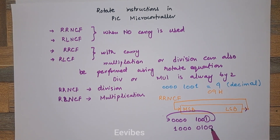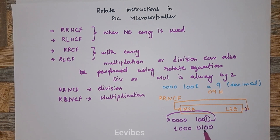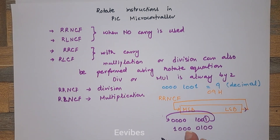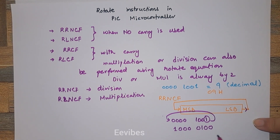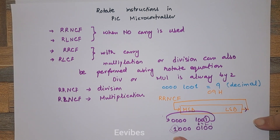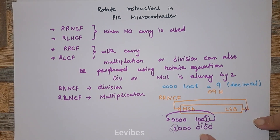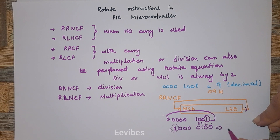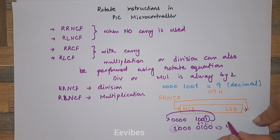If you look at the decimal equivalent of this number — this was 9 — when I performed the rotation, it came out to be 1, 2, 4, 8. We will neglect the MSB because it's used for the representation of the negative number. So after the division of 9 by 2, you got the decimal equivalent of 4.